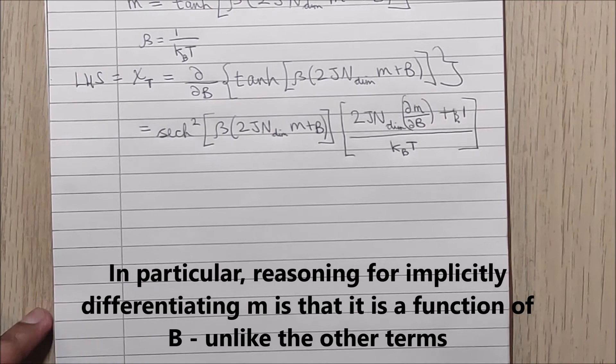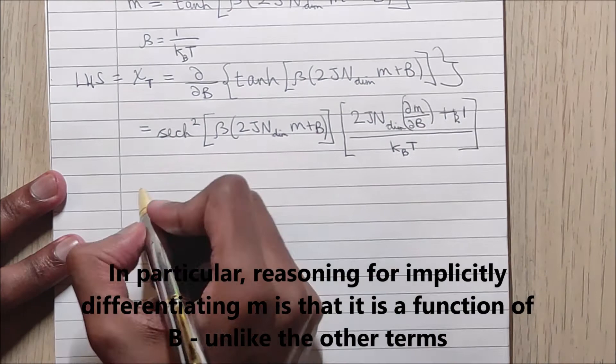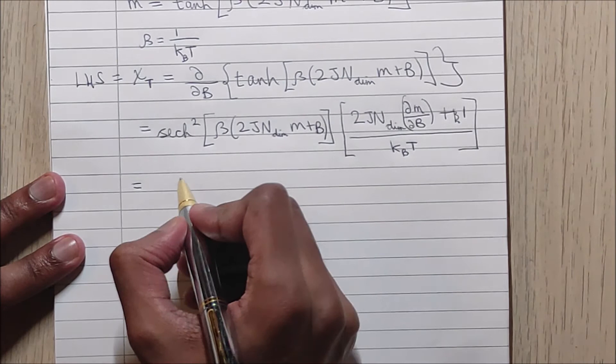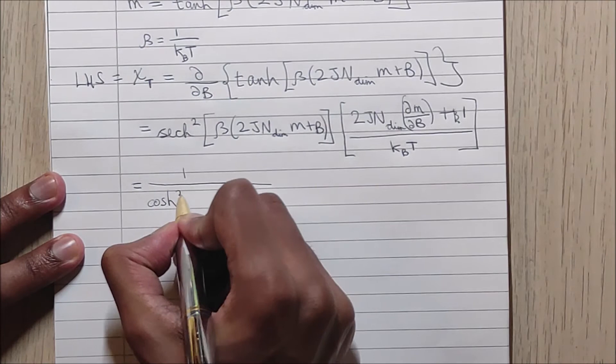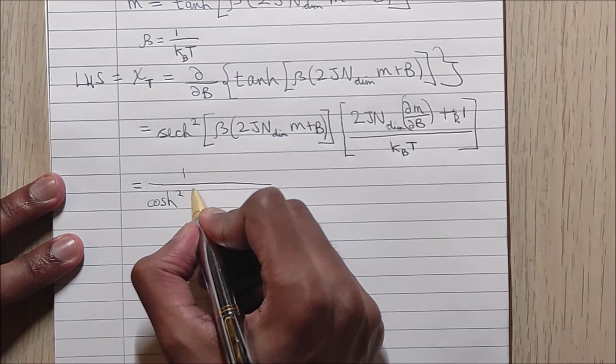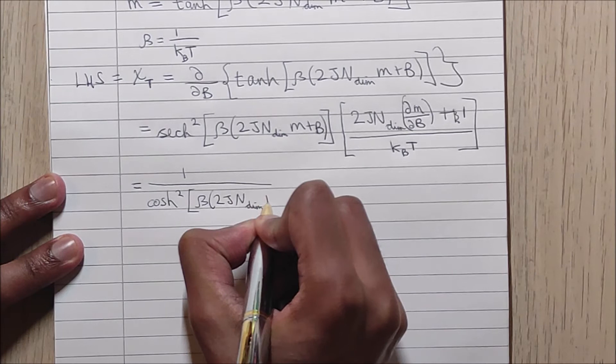Now we can use our definition for the hyperbolic cosine to substitute in here. So this is equivalent to 1 over hyperbolic cosine squared with the same argument as above.